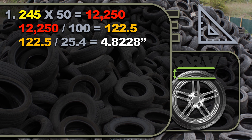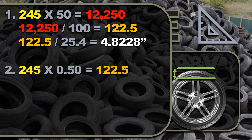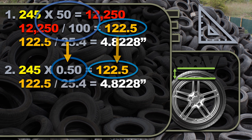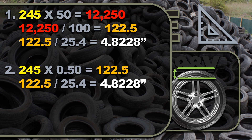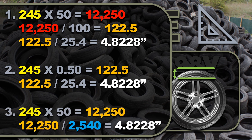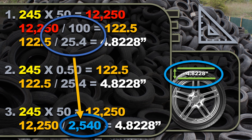The second way is a little quicker: take that second value and move the decimal place two spots over, skipping that second step — you get the same value. Then divide by 25.4 to get 4.8228 inches. The third way: multiply the values together to get 12,250, then divide by 25.40 directly. If you have to divide by 100 and then by 25.40, you can multiply those two together and do it in one step — same result.